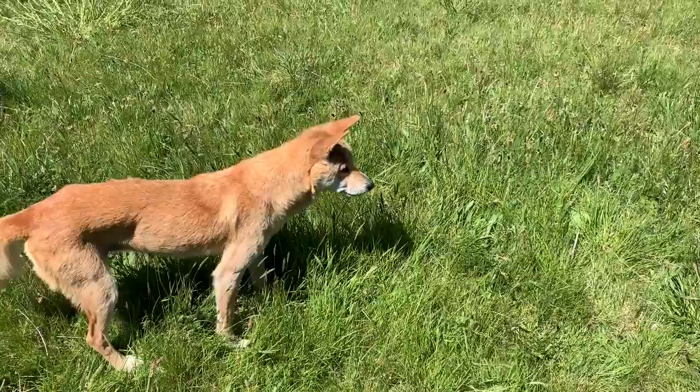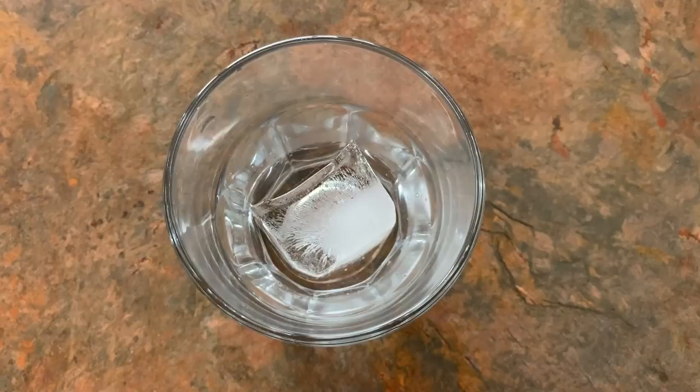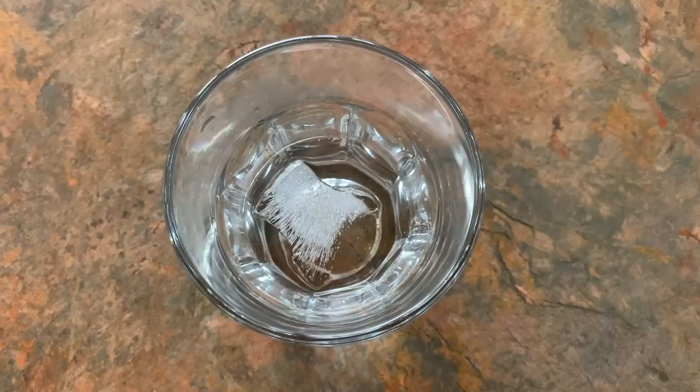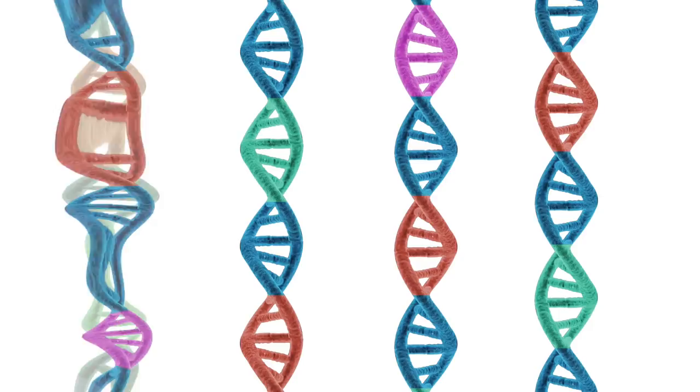Scientific studies rely on the mutation rate of DNA to estimate how long ago something happened. For example, I can put a cup of ice on the bench and leave the room. I know the ice will melt, but I don't know exactly how long it'll take to change into water. I can guess it'll take a few hours, but without knowing the exact temperature of the room, I'm not 100% sure. It's the same with dingo DNA — we know it changes slowly over time, so we can estimate how long ago something happened by looking at how much the DNA has changed, but we're not 100% sure how fast it changes.